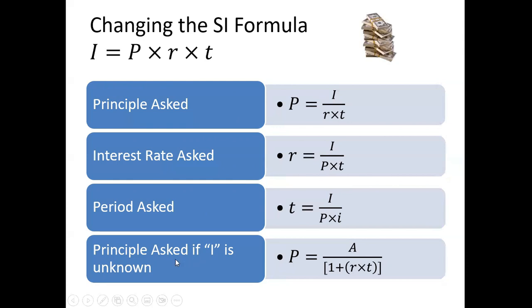But sometimes we get something interesting. The principle is asked, but we do not have the interest. It is not given. And then this is the formula that we need to use. This now becomes the third formula that you have to memorize. And it says that principal amount is equal to the future value divided by 1 plus RT.